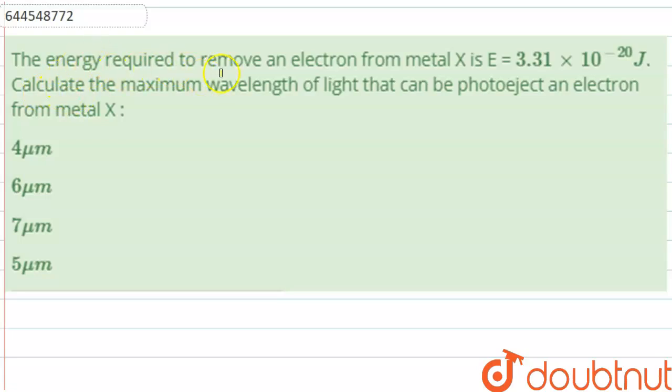The question here is, the energy required to remove an electron from metal X is E equals 3.31 into 10 to the power minus 20 Joule. Calculate the maximum wavelength of light that can be photo ejected an electron from metal X.